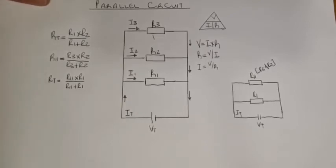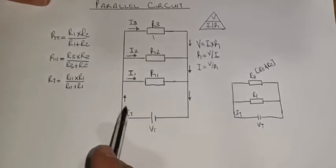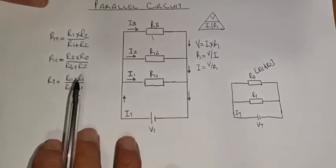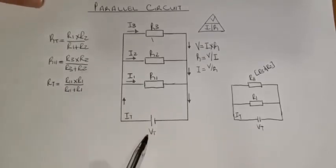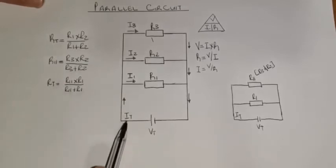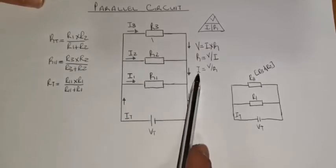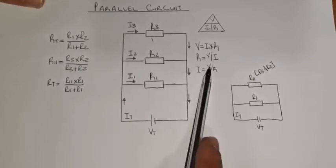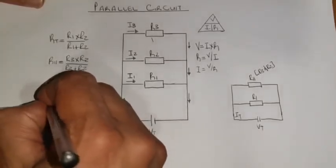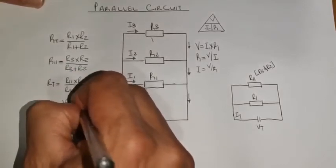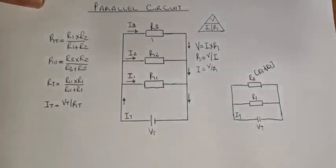Next, we're going to calculate my total current. The total resistance is now calculated correctly, so I can use my total voltage and my total resistance to calculate what is my total current. I must choose the right formula — I total equals V total divided by R total. And there I have my total current in the circuit.